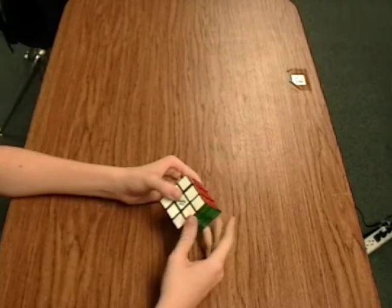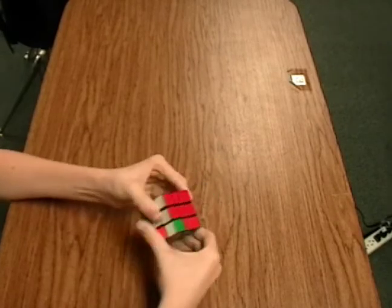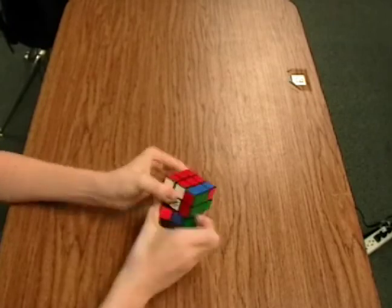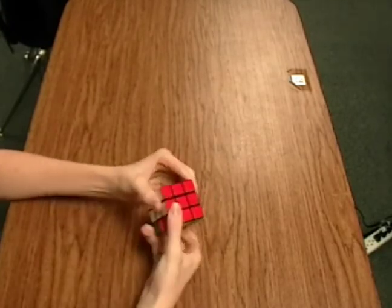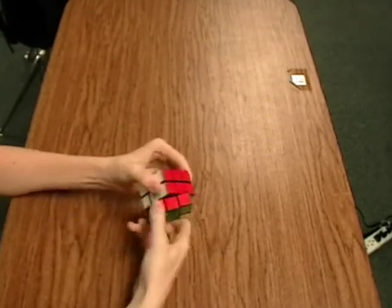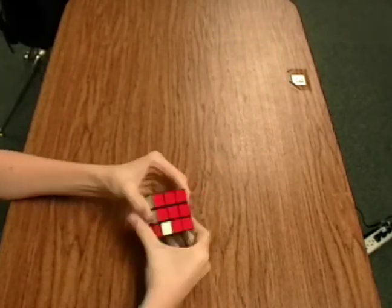One of the most important algorithms that you will need to learn is the algorithm R-I-D-I-R-D. Or right inverted, down inverted, right down. You will use this algorithm more than any other algorithm you will ever use when solving a Rubik's Cube.